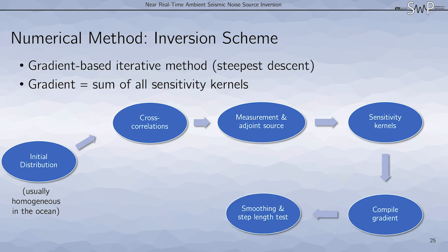We perform some smoothing and a step length test to then update the source distribution. Then finally this updated source distribution is used to forward model the next set of cross correlations. We usually perform about 10 iterations, as synthetic tests have shown that the misfit converges rather nicely after the first few iterations.